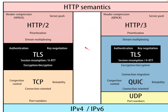QUIC takes parts from both the application layer and the transport layer and embodies that in its own protocol. Stream multiplexing, congestion control, connection orientation, and reliability are all now part of QUIC, making it a hybrid between the application and transport layer. Some highlights: it has faster handshaking, existing connections are no longer required to set up communication channels, it has improved error handling, flexible congestion control, and encryption is built in.